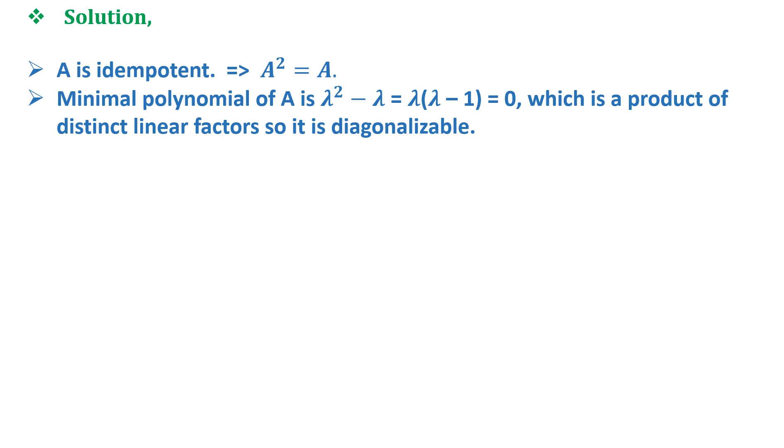Now let us solve the question. Option A says that A is idempotent which implies that A² = A. From here we get the minimal polynomial of A is λ² - λ = λ(λ - 1) = 0, which is a product of distinct linear factors so it is diagonalizable.